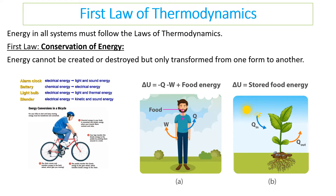For example, if you had 100 joules of energy going into an alarm clock, 100 joules of energy would have to come out — but not all of that is useful energy; some of it is going to be coming out as wasted energy.